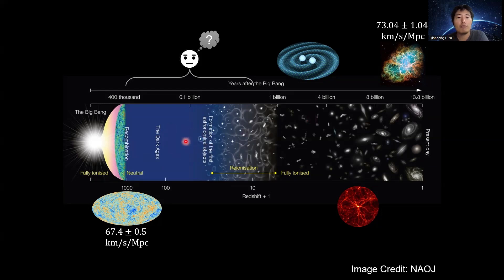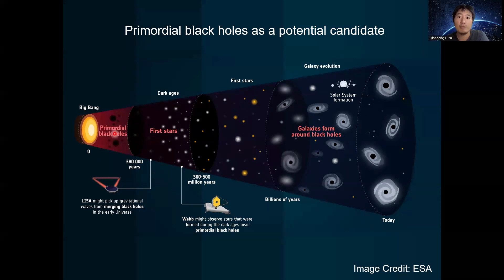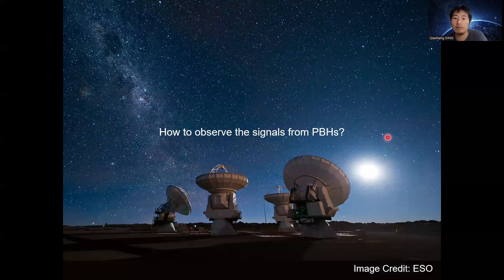Which kind of object can help us measure the Hubble parameter at such high redshift in the Dark Ages? Primordial black holes can be a potential candidate. The reason is that primordial black holes were formed in the early universe, and if their mass is larger than 10^15 grams, they can exist in the current universe. Therefore, primordial black holes can be a potential object to help us understand the evolution of the universe from early to late times. But in order to measure the Hubble parameter from primordial black holes, we need to first detect signals from them.